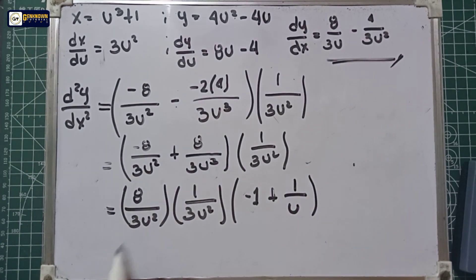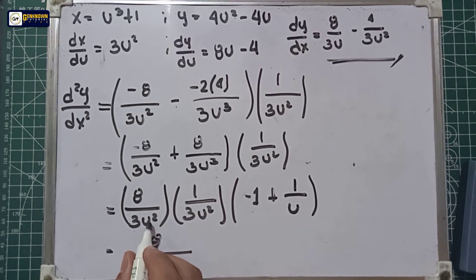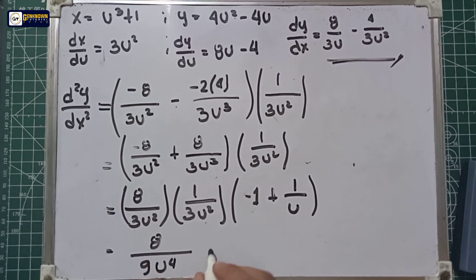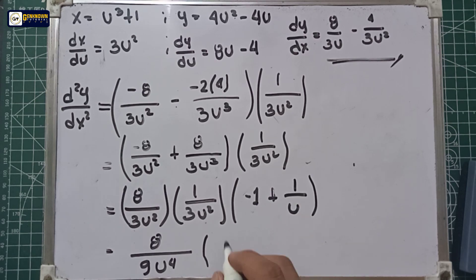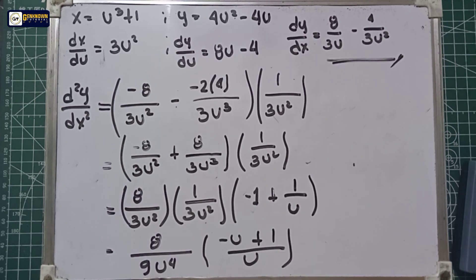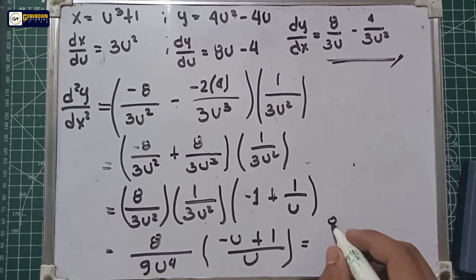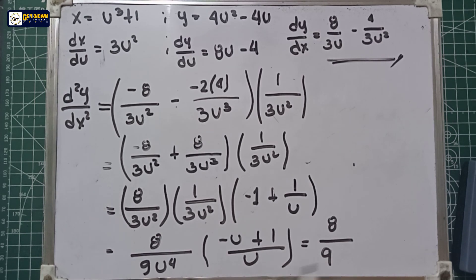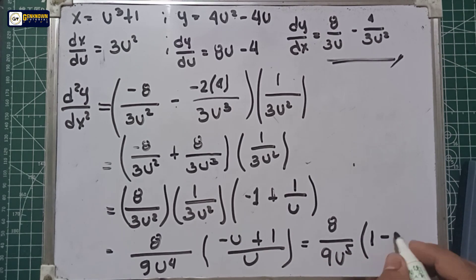So this is also equal to 8 multiplied by 3u squared, multiply by 3u squared, giving us 9u to the fourth power. Using the butterfly method to add, we get negative u plus 1 over u. So u multiplied by 9u to the fourth gives us 8 over 9u to the fifth power, multiply by the quantity of 1 minus u. So this is the final answer for the second derivative under the parametric form.